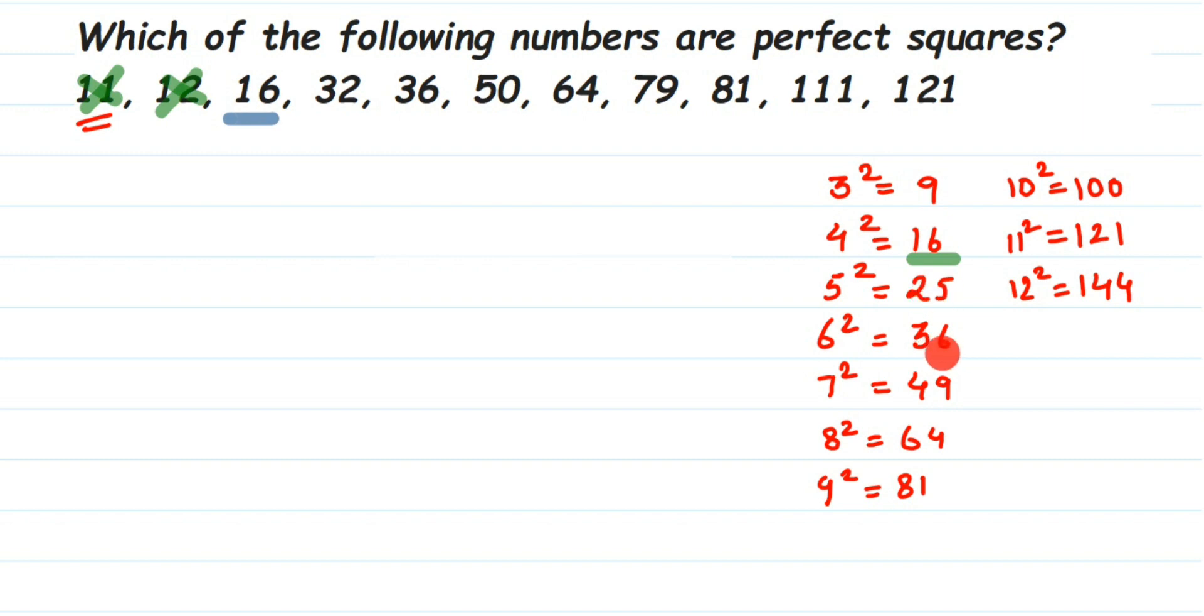Next we have 32. We don't have 32, we have 25 and 36, so 32 is also not a perfect square number. Next we have 36. 36 is a perfect square number, 6 square is 36. Then we have 50. You can see that we have 49 and we have 64, so it is not a perfect square.